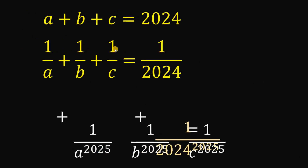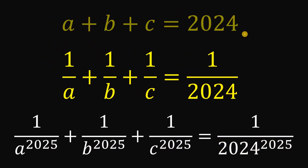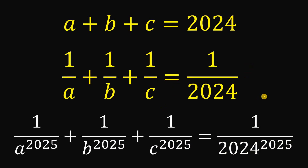Therefore, given the two equations A plus B plus C equals 2024 and 1 over A plus 1 over B plus 1 over C equals 1 over 2024, the value of the expression — regardless of which case applies — is simply 1 over 2024 raised to the power of 2025. And this is our answer. As always, we are done.